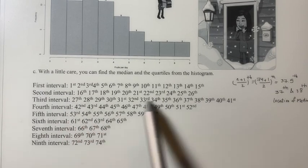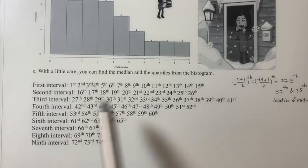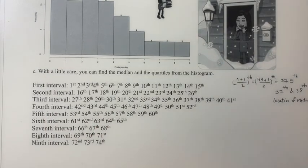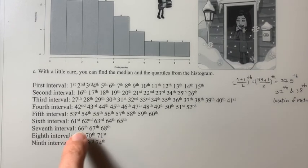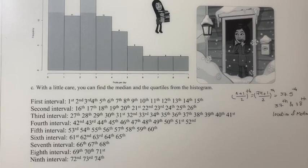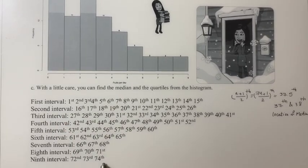And then the third interval, 15 individuals. I wrote down number 27 to 41. And then up to the last interval, which is the 9th interval. We have just 3 individuals, 3 individuals, 3 individuals. Okay, so I ranked them from the first individual to individual number 74.